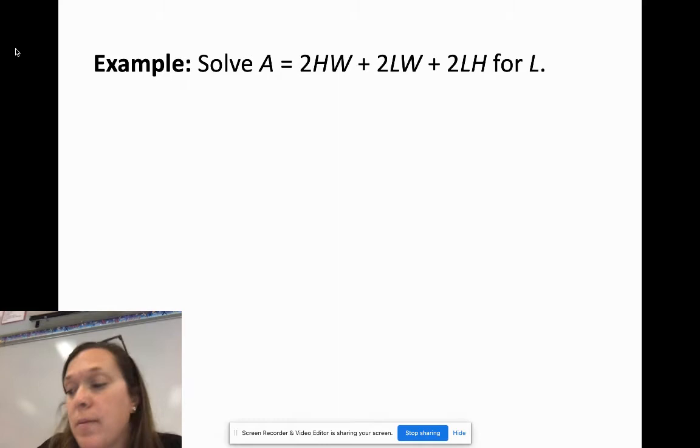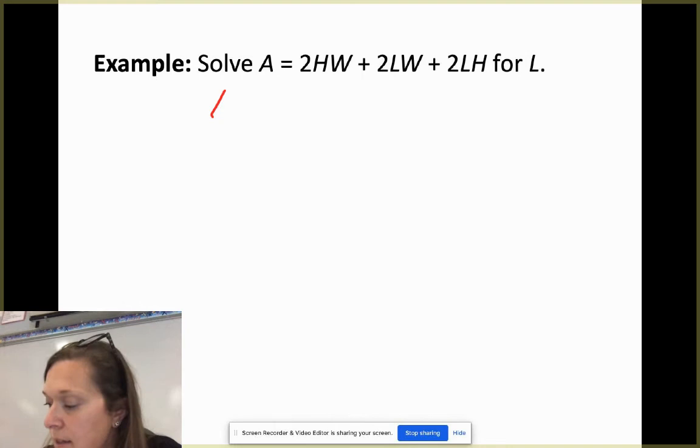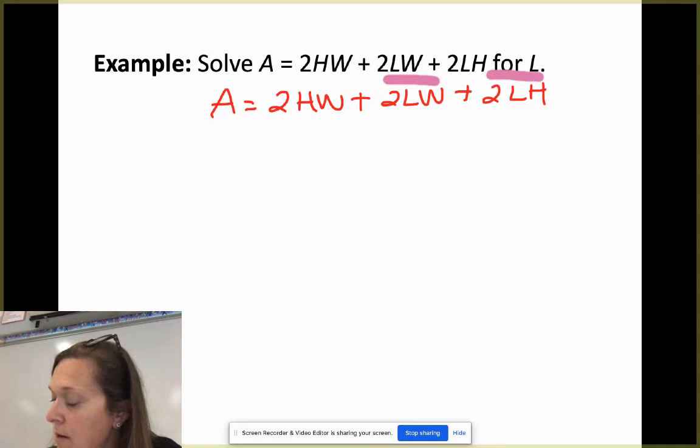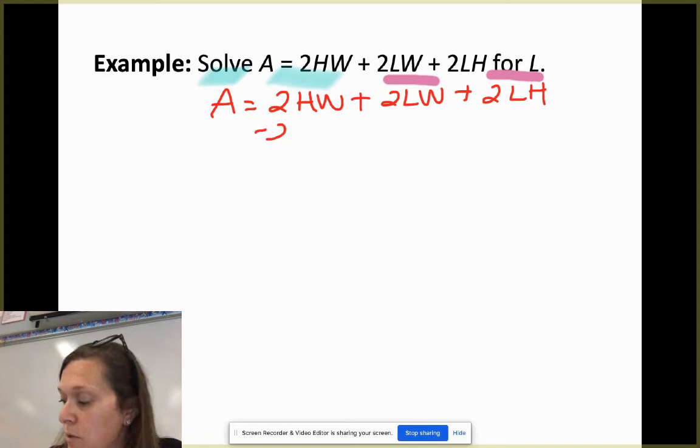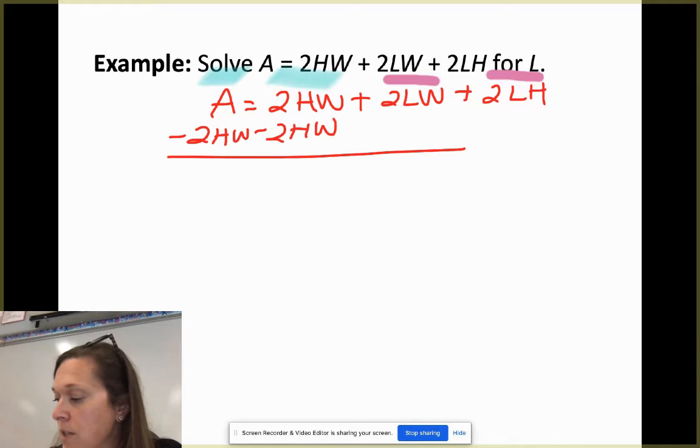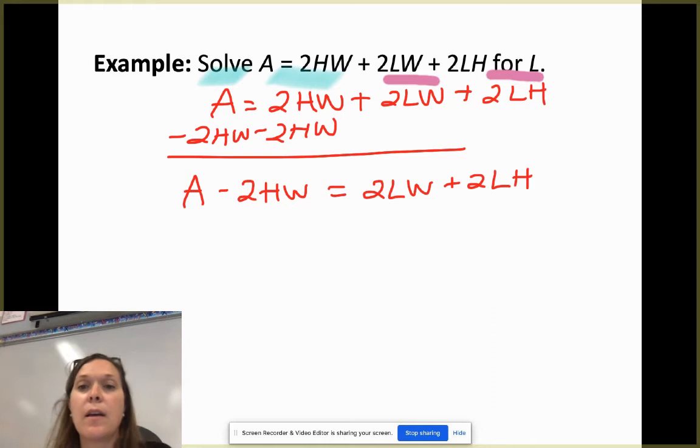Next problem. We're going to make it a bit more complicated. So now we have A is equal to 2HW plus 2LW plus 2LH. And we're solving for L. So I'm going to do the same thing. Here I have an L. Here I have an L. That does not have an L. That does not have an L. So I'm going to move all the blues to the left and I'm going to keep the pinks to the right. So I'm going to do that by subtracting 2HW from both sides, which gives me A minus 2HW is equal to 2LW plus 2LH.